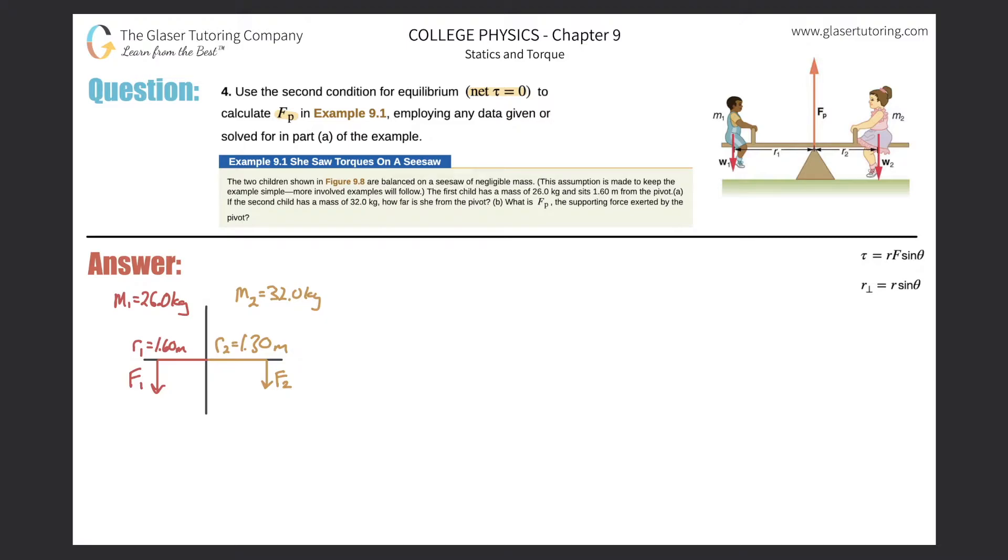This coordinate system here, if you look at the picture up on the right-hand side, it's drawn where the origin of the coordinate system is right at the fulcrum, just like we've been talking about. So now what we need to do is somehow we have to solve for F sub P by using the net torque formula.